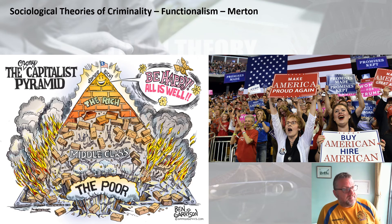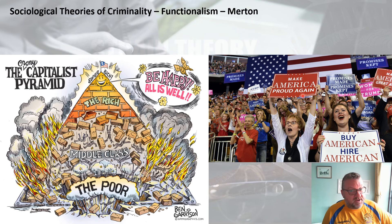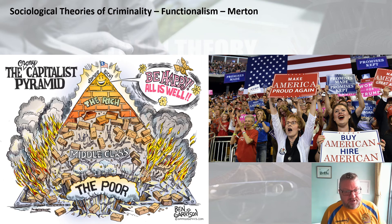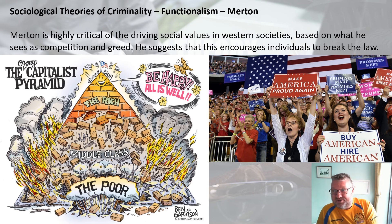Capitalism is without a doubt linked to Merton's strain theory — the idea that the super rich are doing very well at the top, the middle class not so badly, and the poor falling through at the bottom, while the American dream promises success for everyone. Merton is highly critical of the driving social values in Western societies, based on what he sees as competition and greed, and he suggests that this encourages individuals to break the law.